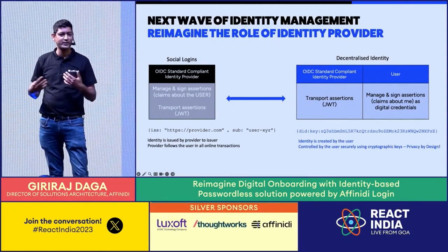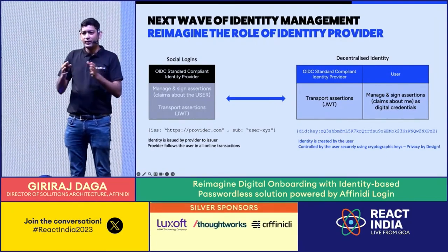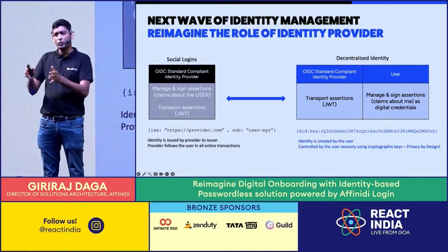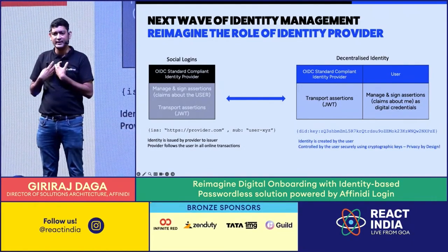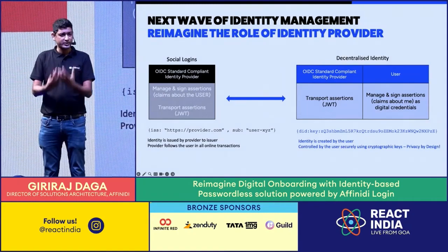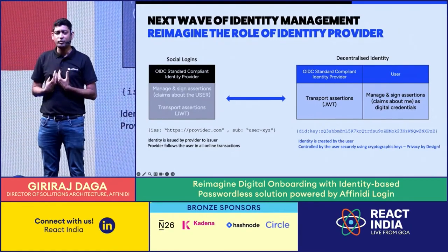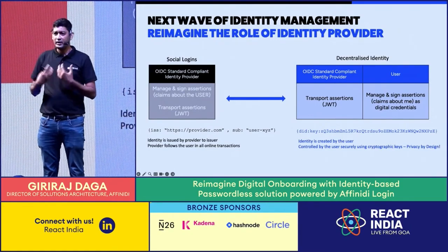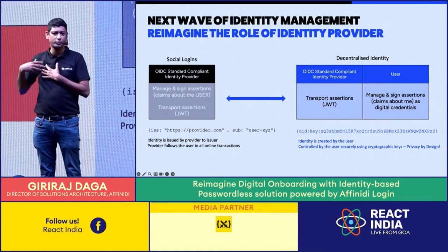If they allow social login, they probably know more about me than I do about myself. But if I turn this upside down — what if the identity provider still transports my attributes in an open standard format, but the actual assertions of who I am, what attributes, traits, and preferences I have, are actually coming from me?